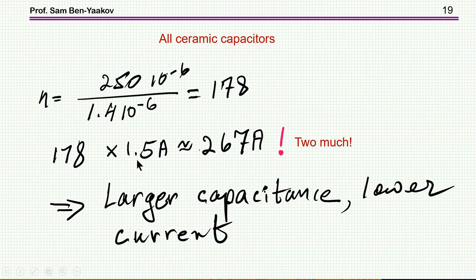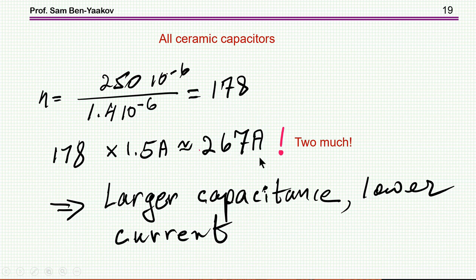The current per capacitor will be 61 divided by 178, so each capacitor carries only a fraction of its maximum. Of course, you can look for a larger capacitance capacitor with lower per-unit current rating, which might be a better choice. There is room to optimize by choosing a capacitor of different capacitance and current-carrying capability.